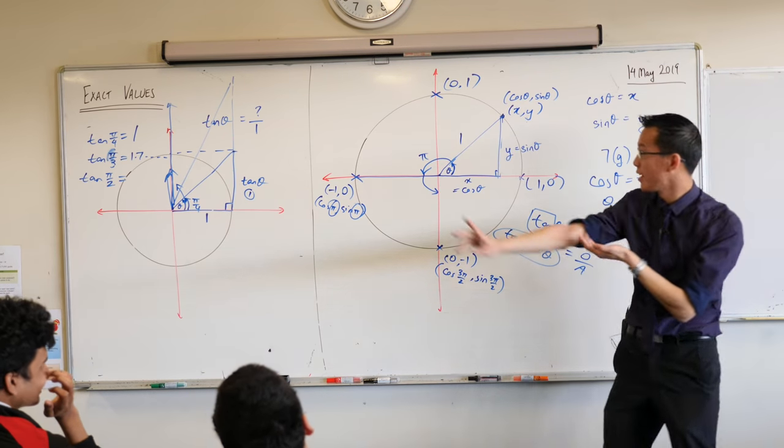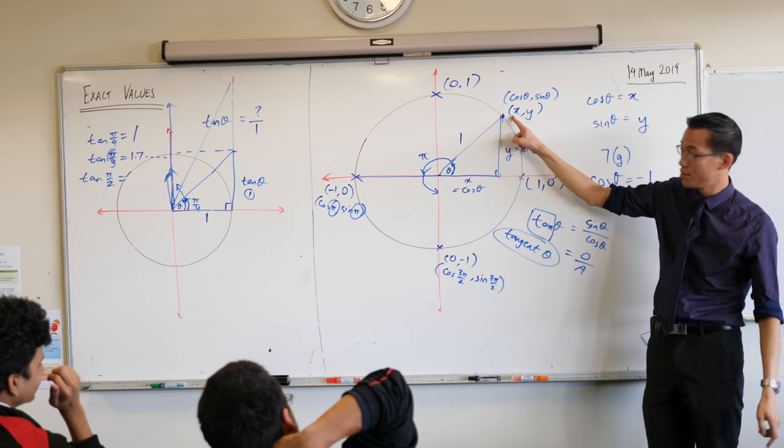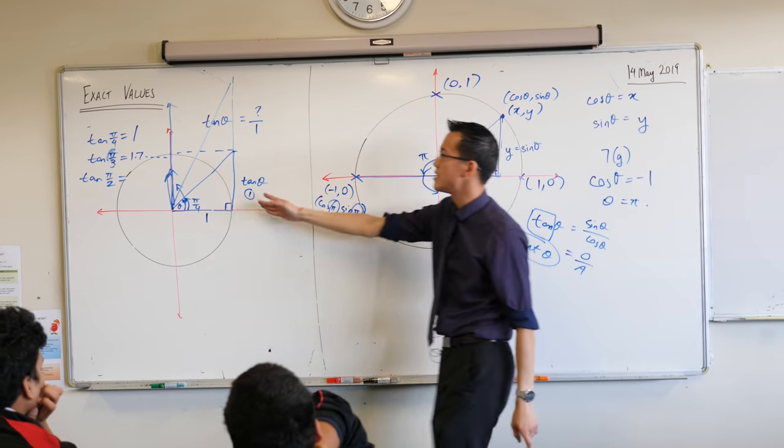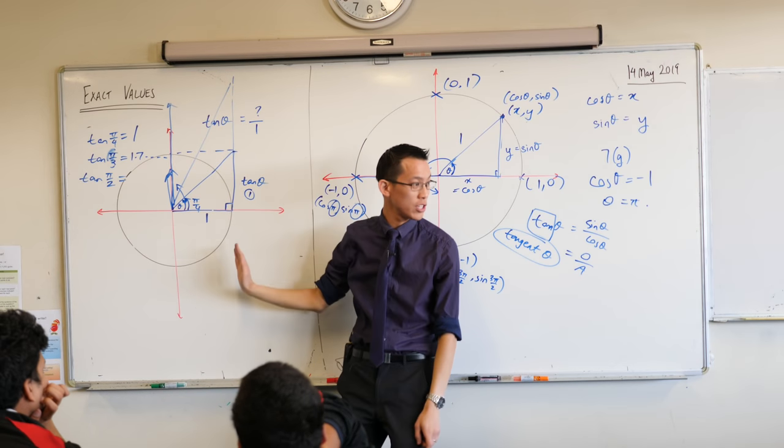So, cos is the x-coordinate on the circle, sine is the y-coordinate, tan is the length of this tangent that you get when you extend it upwards.